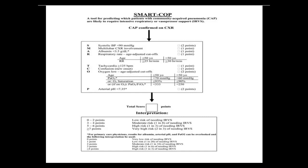The SMART-COP score from Australia uses: S for systolic pressure less than 90 (two points); M for multilobar chest X-ray involvement; A for albumin less than 3.5 (one point); R for respiratory rate adjusted for age (one point); T for tachycardia ≥125 (one point); C for confusion (one point); O for oxygen desaturation (two points, distinguished by age under or over 50); and P for arterial pH less than 7.35 (two points). Published in Clinical Infectious Diseases.